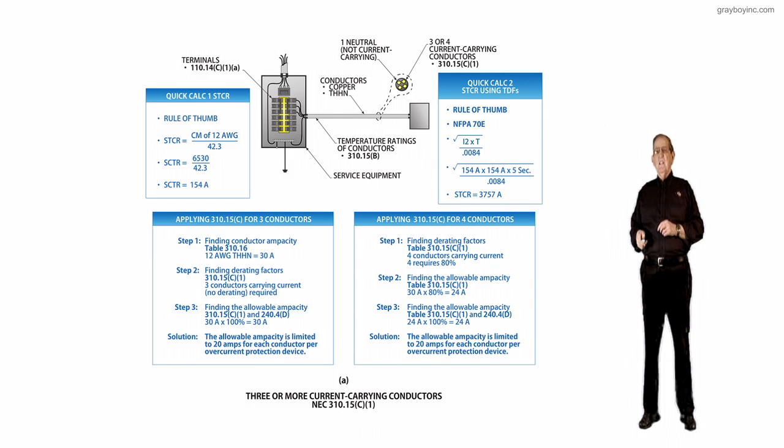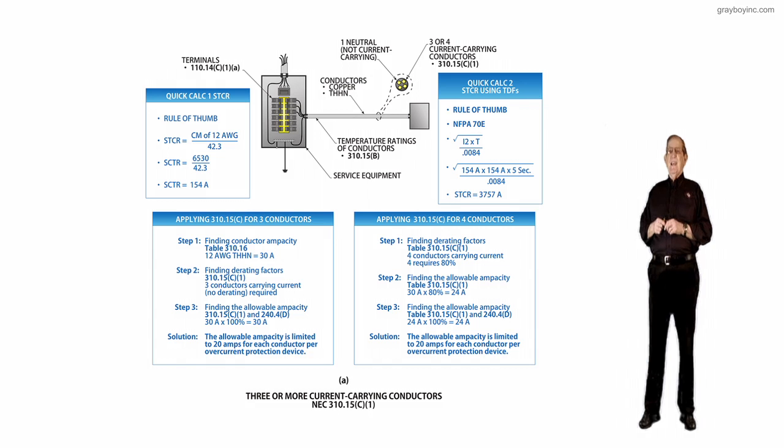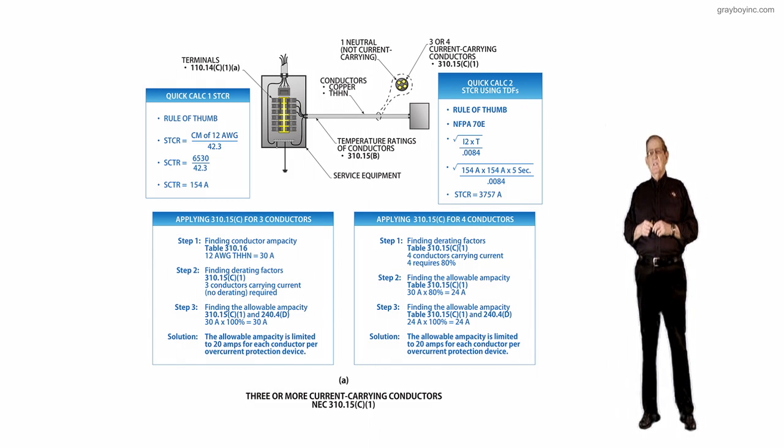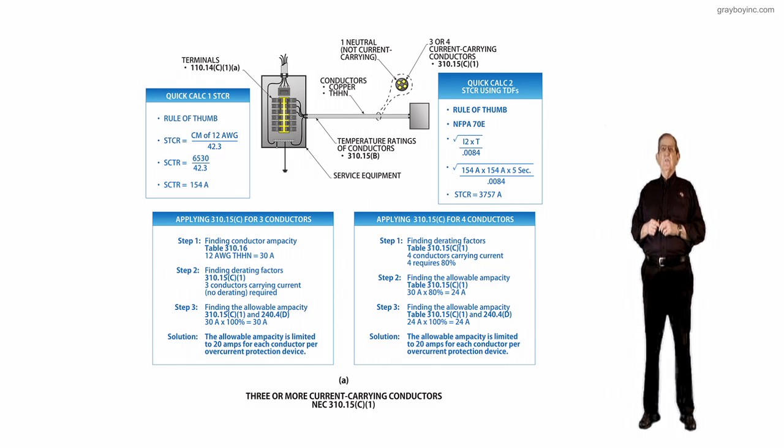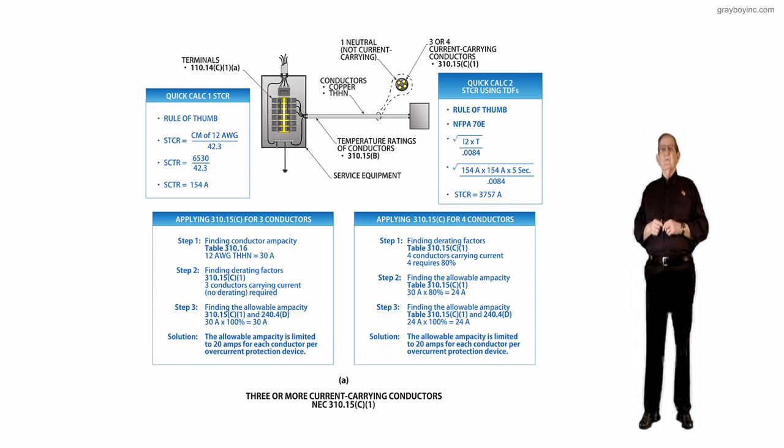The purpose of the change in 310.15 C1 has been relocated from table 310.15 B3A in the 2017 National Electrical Code. Now I'm going to take this in a step procedure, but you could do it any way that you want to do it.